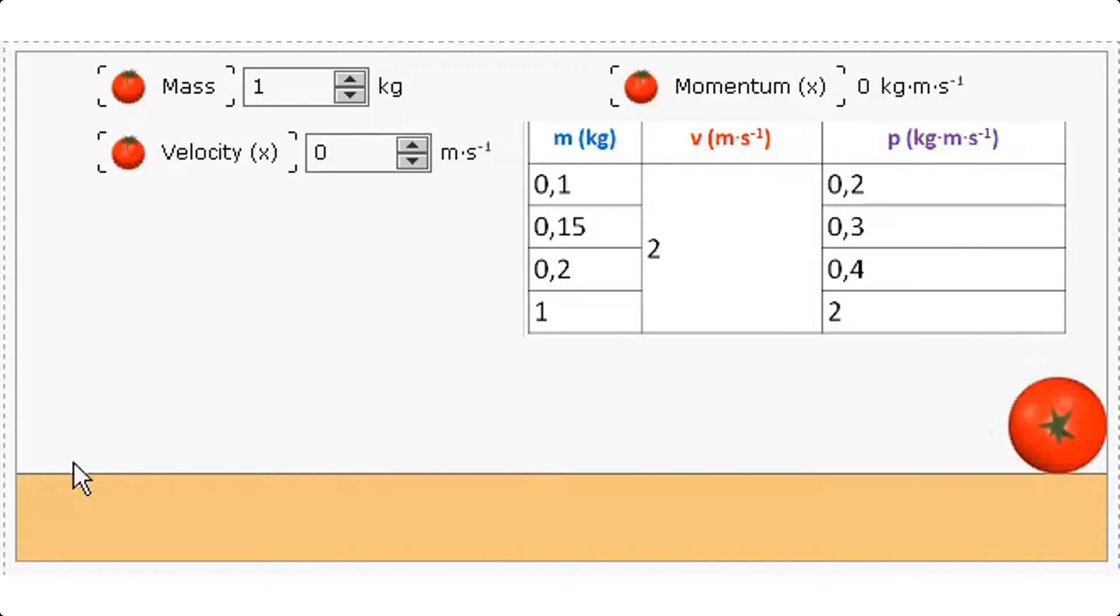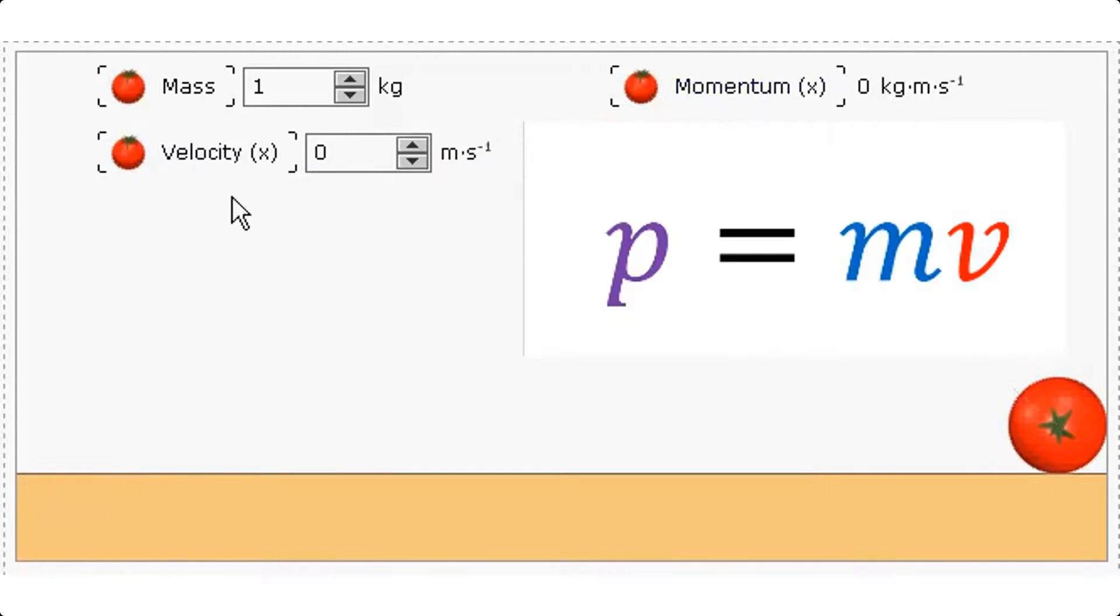I hope you've realized that momentum is equal to the product of mass and velocity. Let's get some practice with this. This tomato has a mass of 1 kilogram. If I were to give it a velocity of 5 meters per second what would its momentum be? 5 kilogram meters per second.